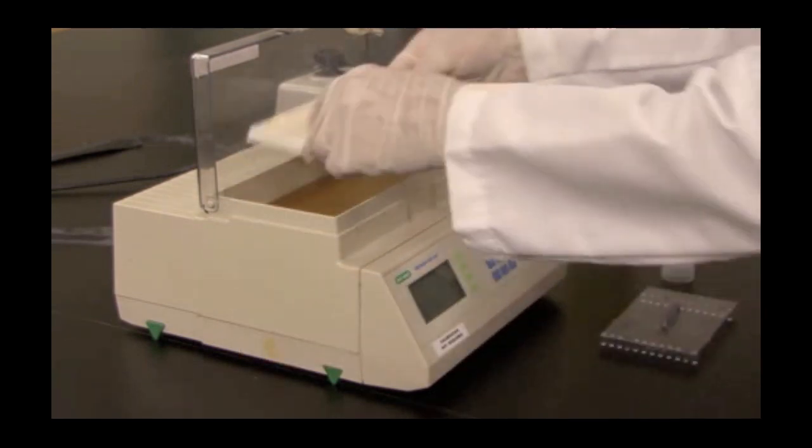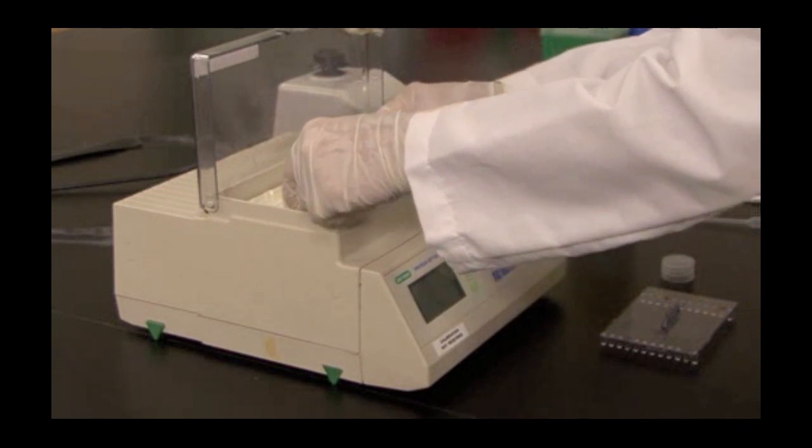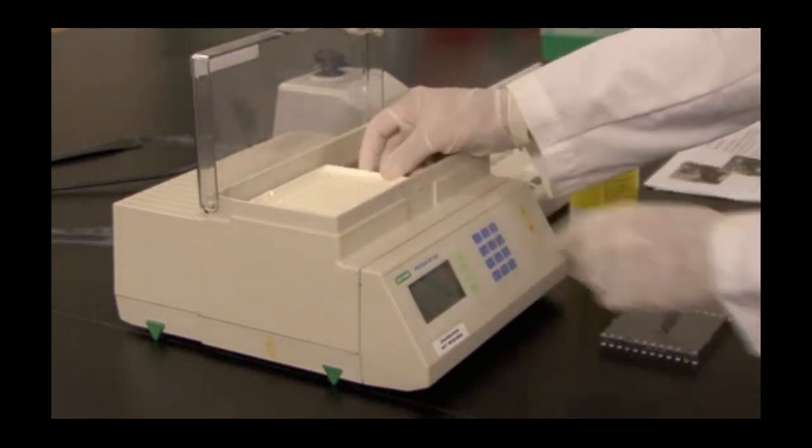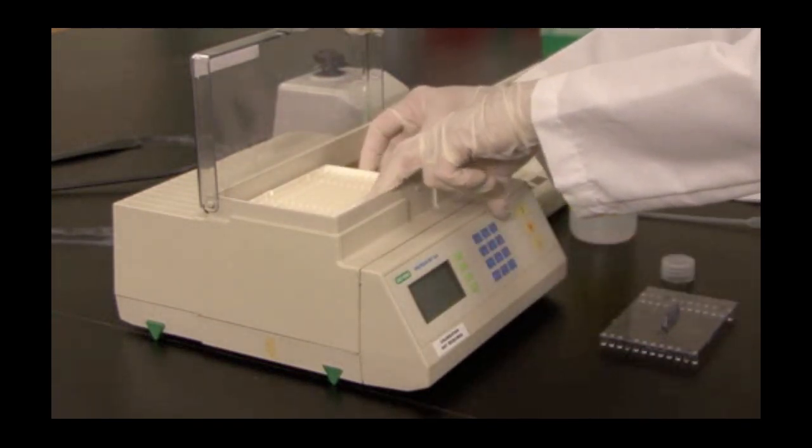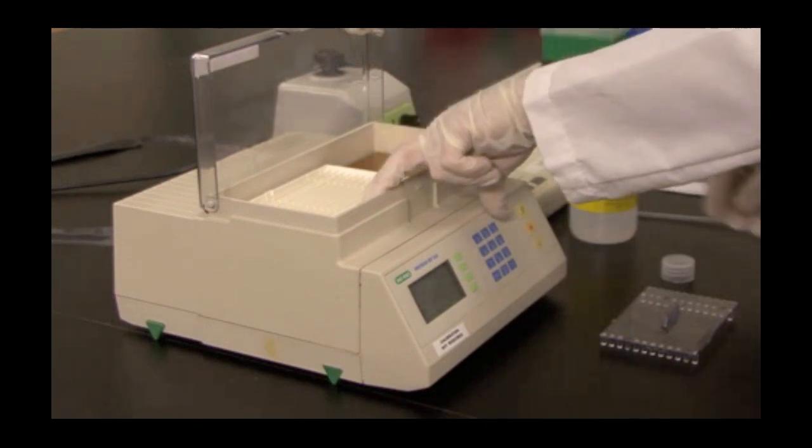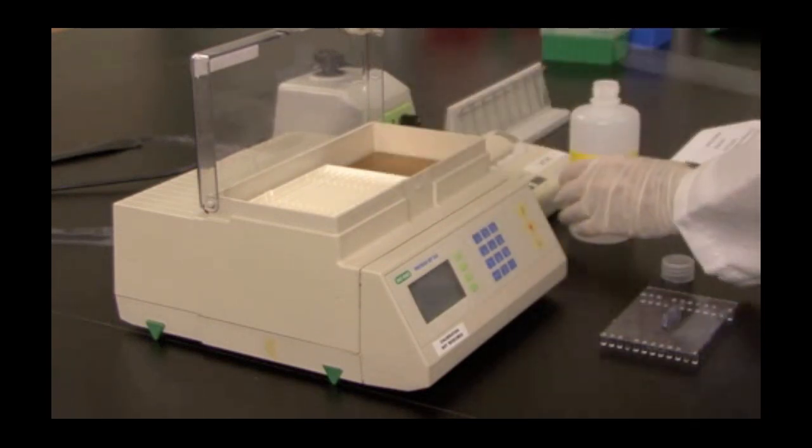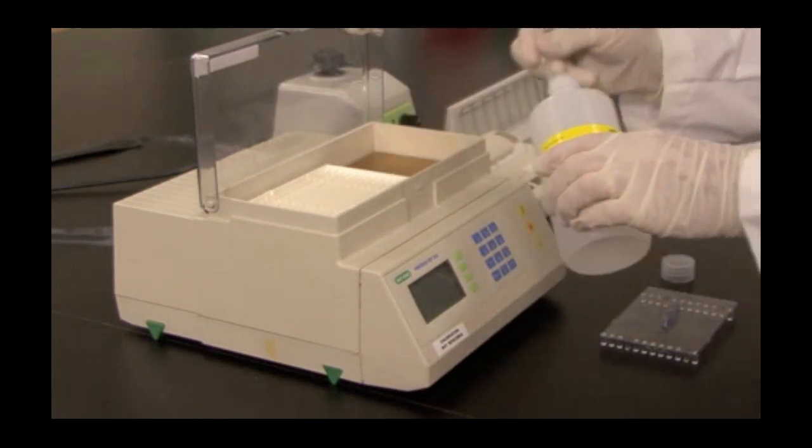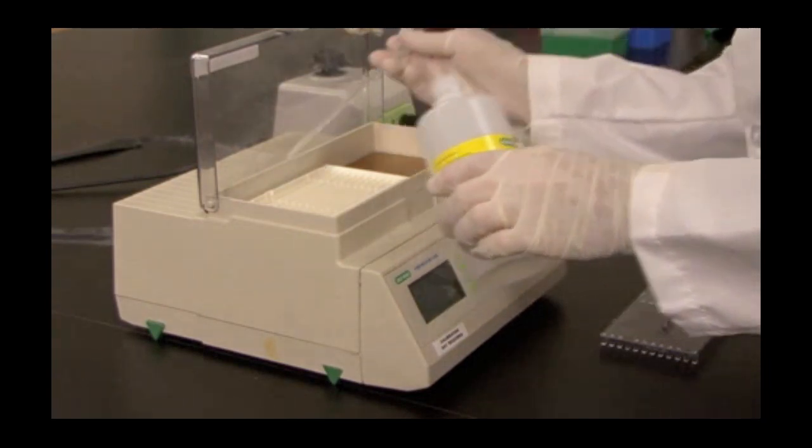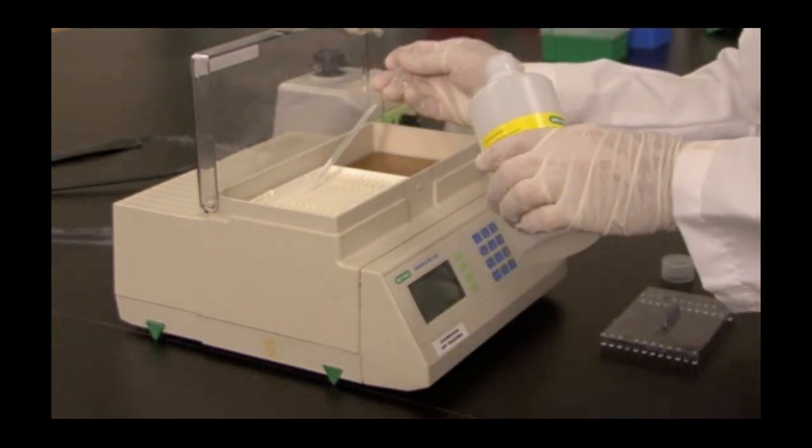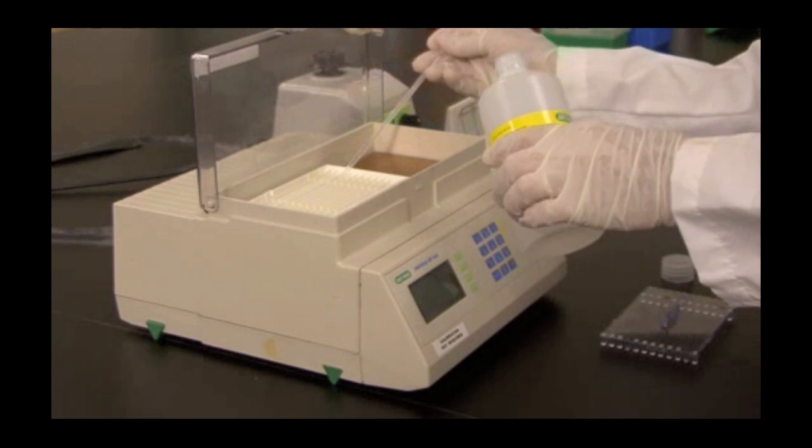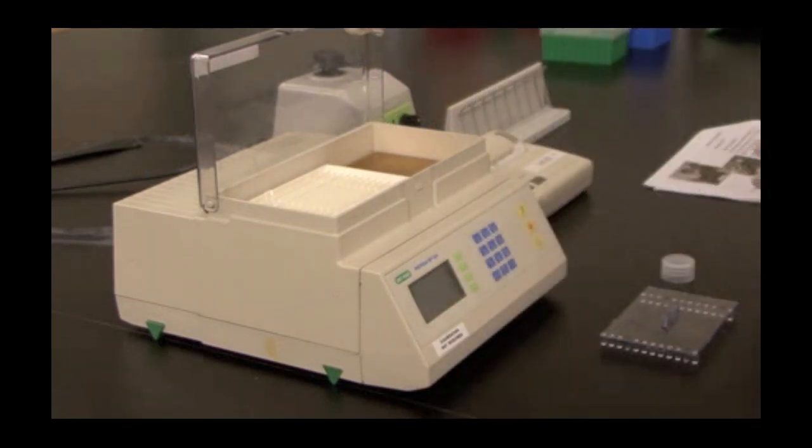Place the focusing tray into the protein IEF cell, making sure to align the positive electrode of the focusing tray with the positive electrode of the protein IEF cell, and add enough mineral oil to cover the strip in each lane. The purpose of the mineral oil is to prevent the strips from drying out during the course of the rehydration and the run.